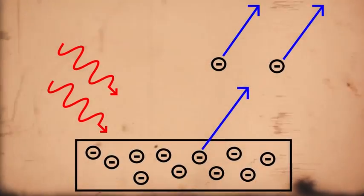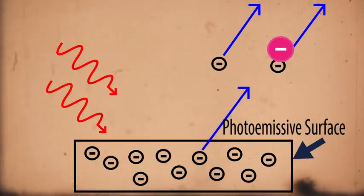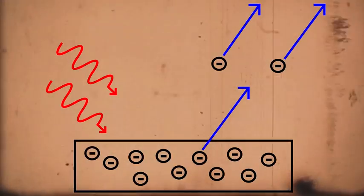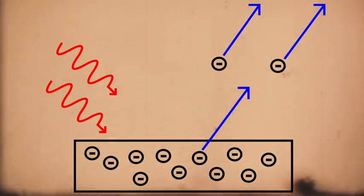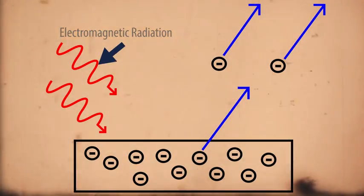The photoelectric effect is essentially the release of electrons from a photoemissive surface, typically a metal surface, when it is exposed to electromagnetic radiation.